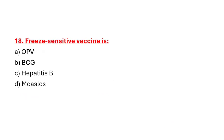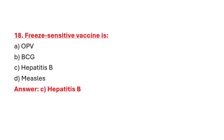Question 18: Freeze-sensitive vaccine is. Option A: OPV. Option B: BCG. Option C: Hepatitis B. Option D: Measles. Correct answer is Option C: Hepatitis B.